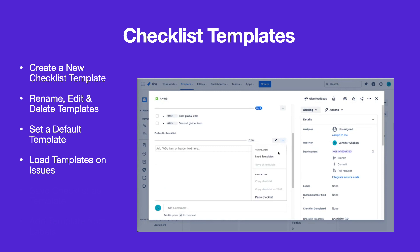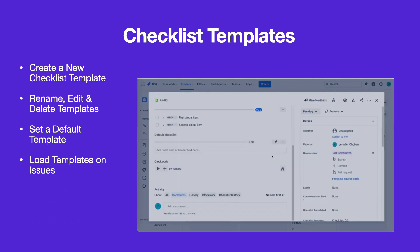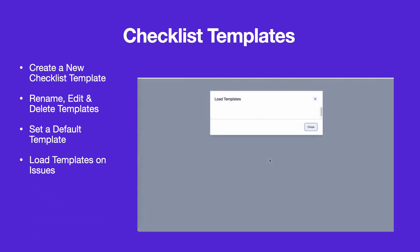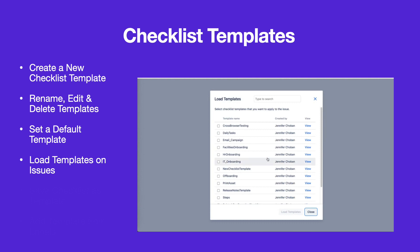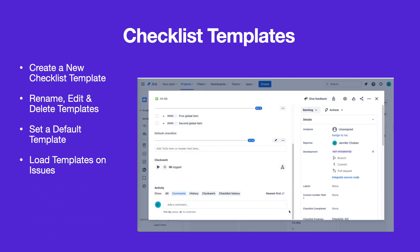To load templates on existing issues, click on the More menu and select Load Templates. The list of templates will be shown, and you can preview them and select the template or templates you want to add to the issue.